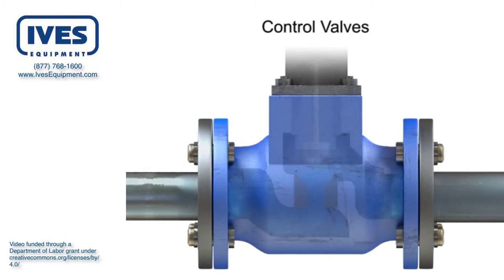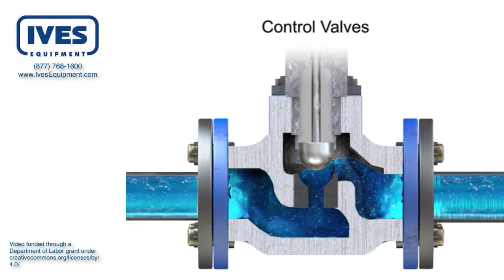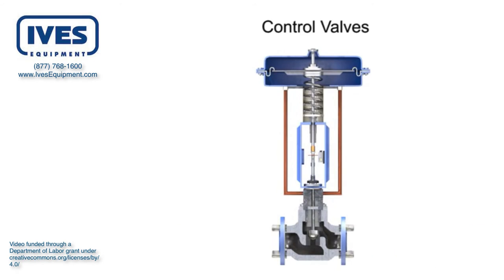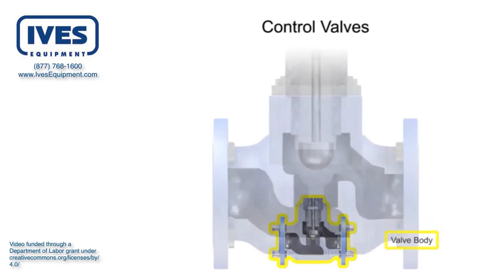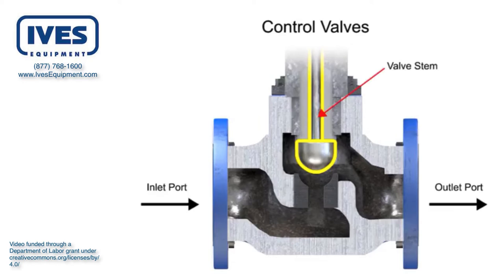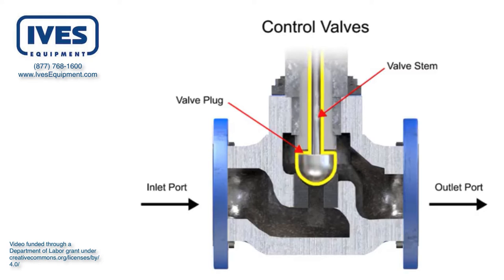Control valve actuators control fluid in a pipe by varying the orifice size through which the fluid flows. Control valves contain two major components: the valve body and the valve actuator. The valve body provides the fluid connections and a movable restrictor comprised of a valve stem and plug that is in contact with the fluid that varies the flow. The valve actuator is the component that physically moves the restrictor to vary the fluid flow.